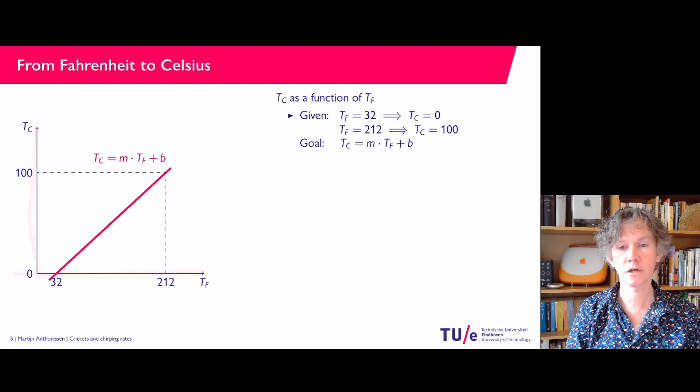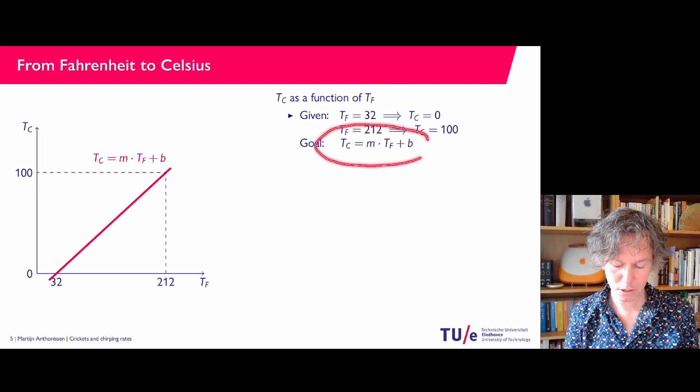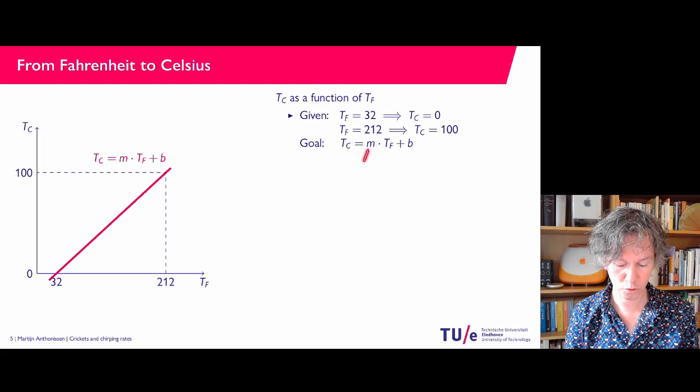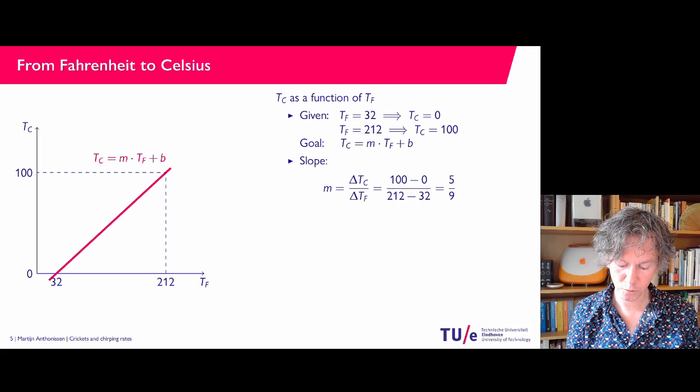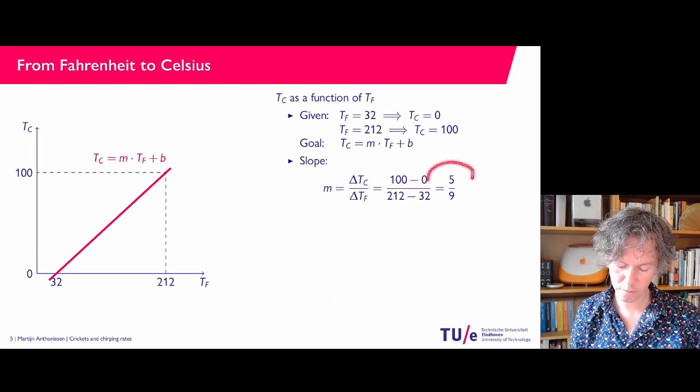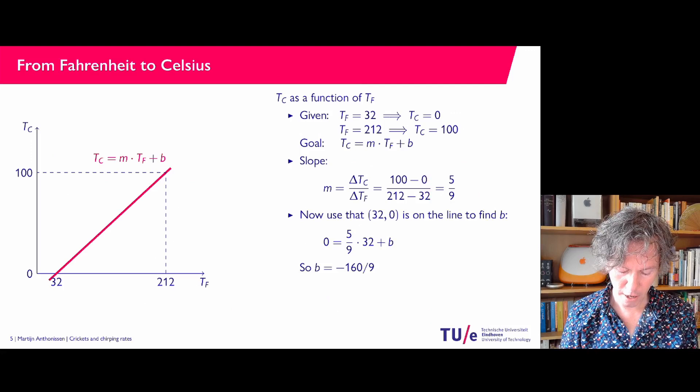So I put these numbers on my axes — horizontal axis is temperature in Fahrenheit, vertical axis is temperature in Celsius. This is just what we did before. I'm looking for a linear relationship, so I need to find the slope M and the intercept B. For the slope I take delta Y, which is 100, over delta X, which is 212 minus 32. If you simplify that, you get M equals 5 over 9.